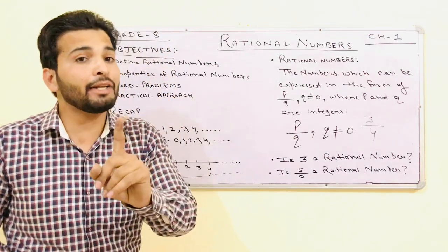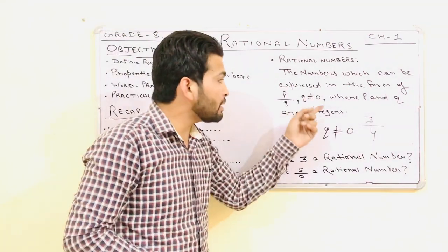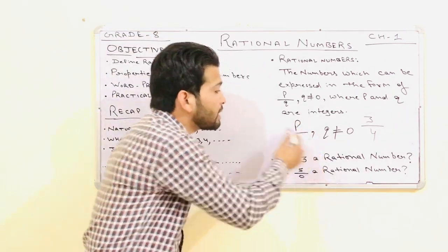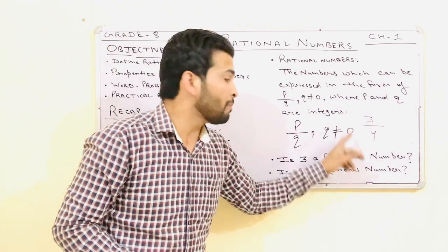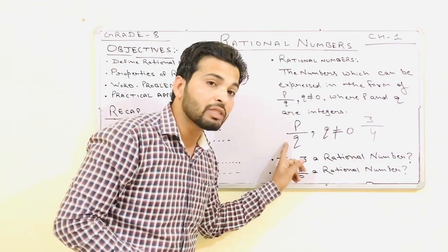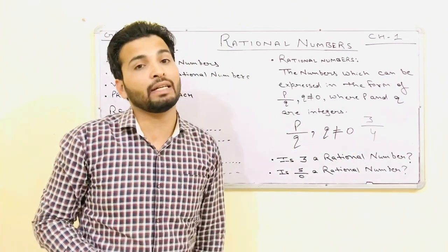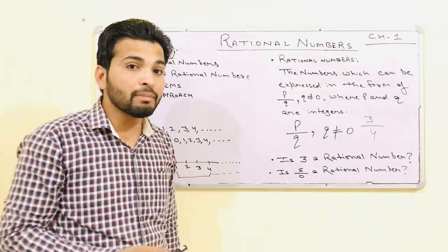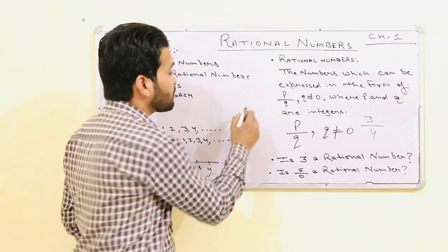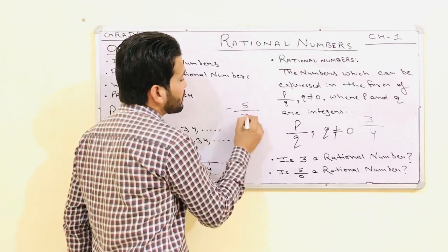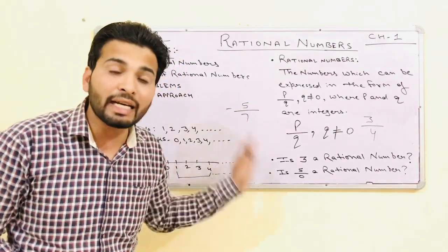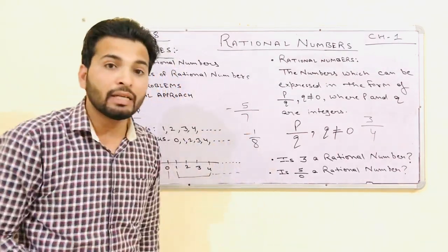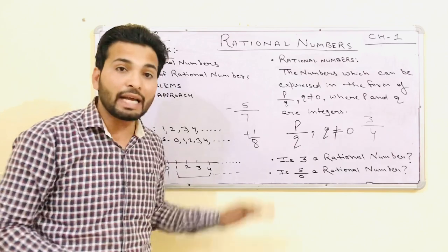Remember: the number expressed in the form of P upon Q — this denominator Q should not be equal to 0. If it becomes 0, it is not defined. Is 1 upon 3 a rational number? Yes. Is minus 5 upon 7 a rational number? Yes. Is minus 1 upon 8 a rational number? Yes. Is plus 1 upon 8 a rational number? Yes.